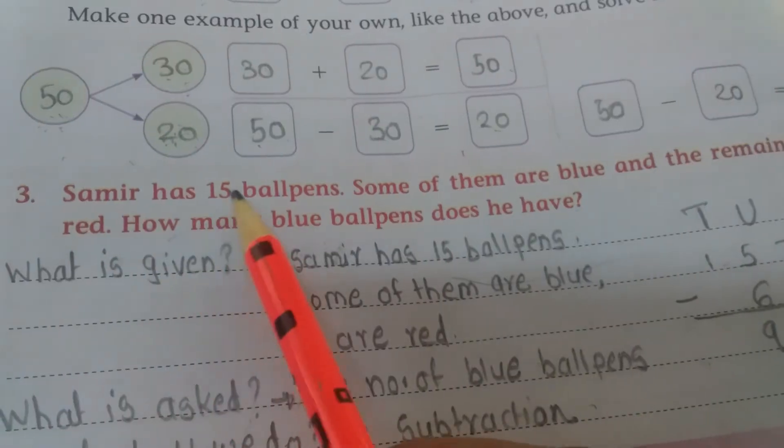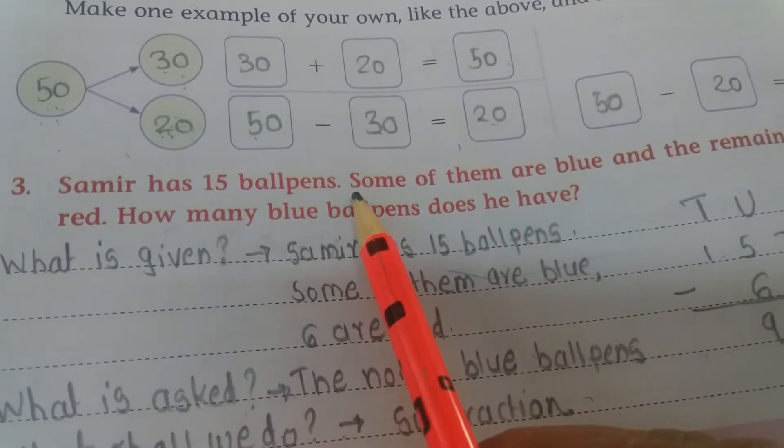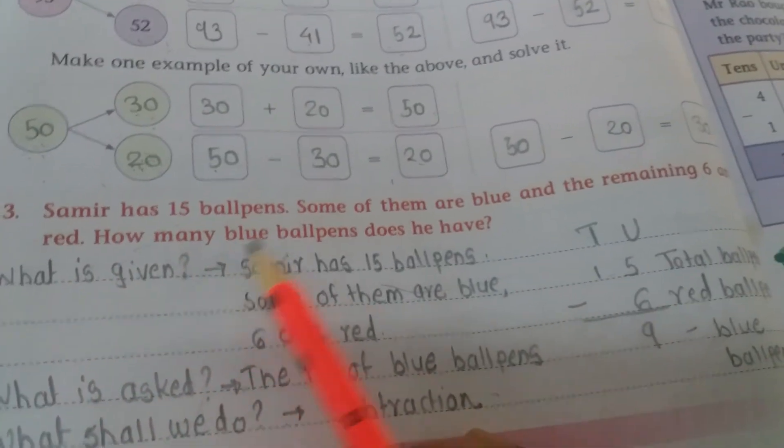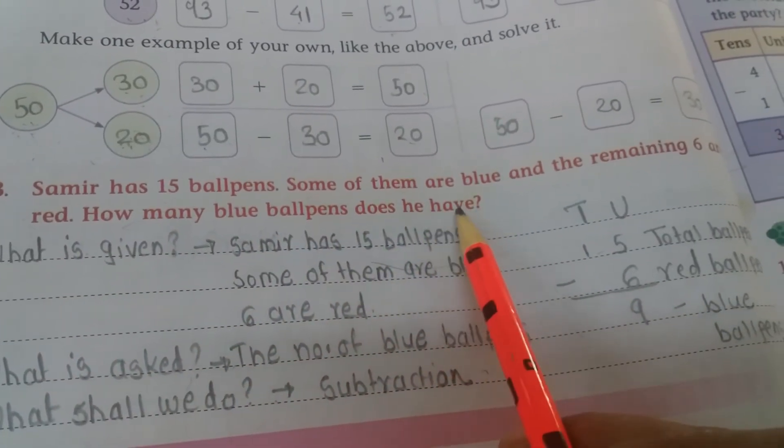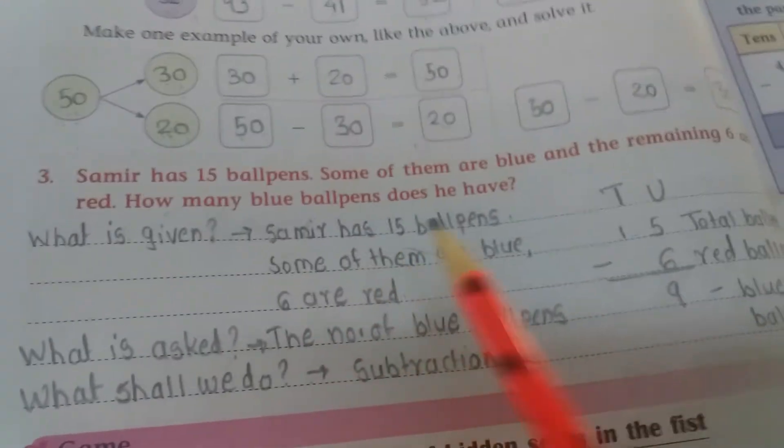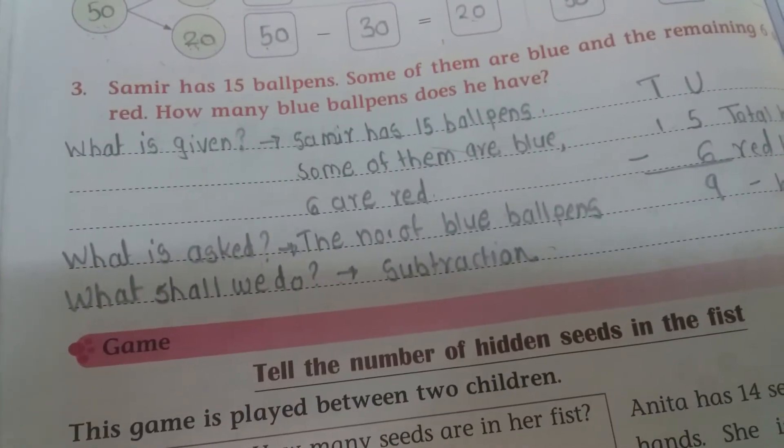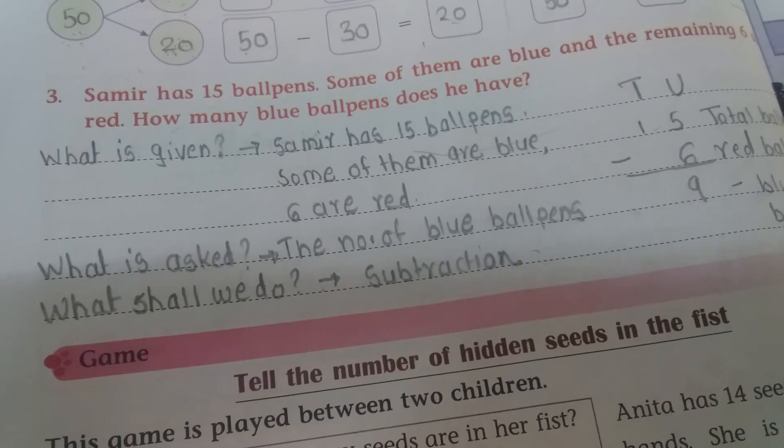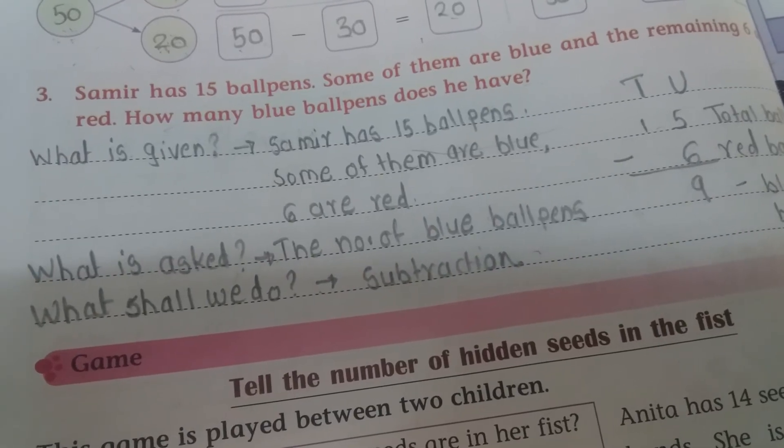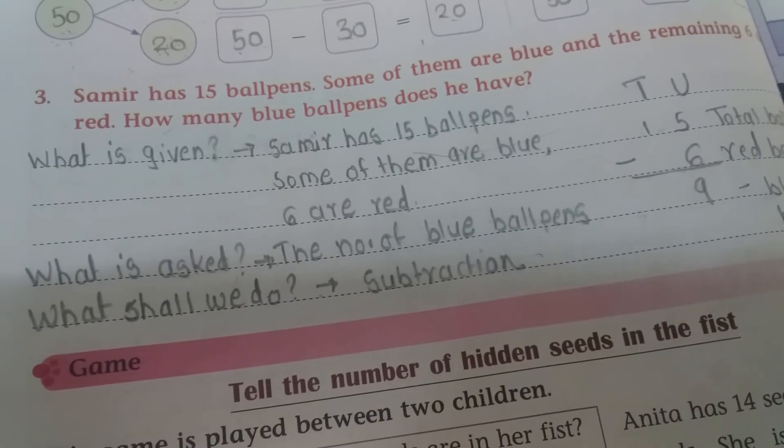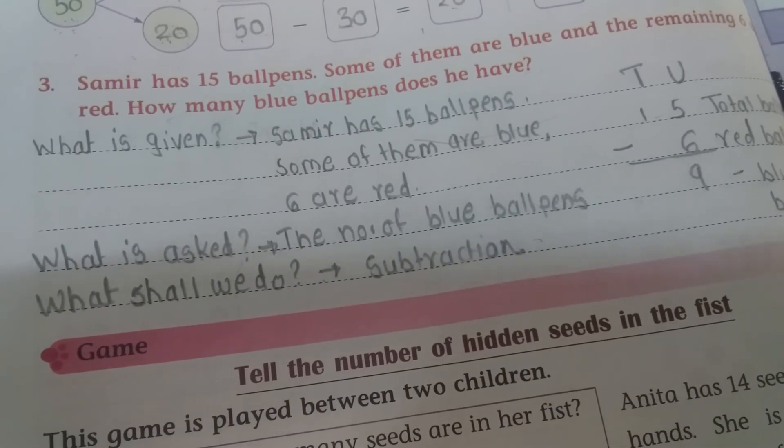Third number, Samir has 15 ball pens, some of them are blue and the remaining 6 are red. How many blue ball pens does he have? What is given children here? See, Samir has 15 ball pens, some of them are blue and the remaining 6 are red. Means 6 ball pens, total ball pens 15 and 6 are red.